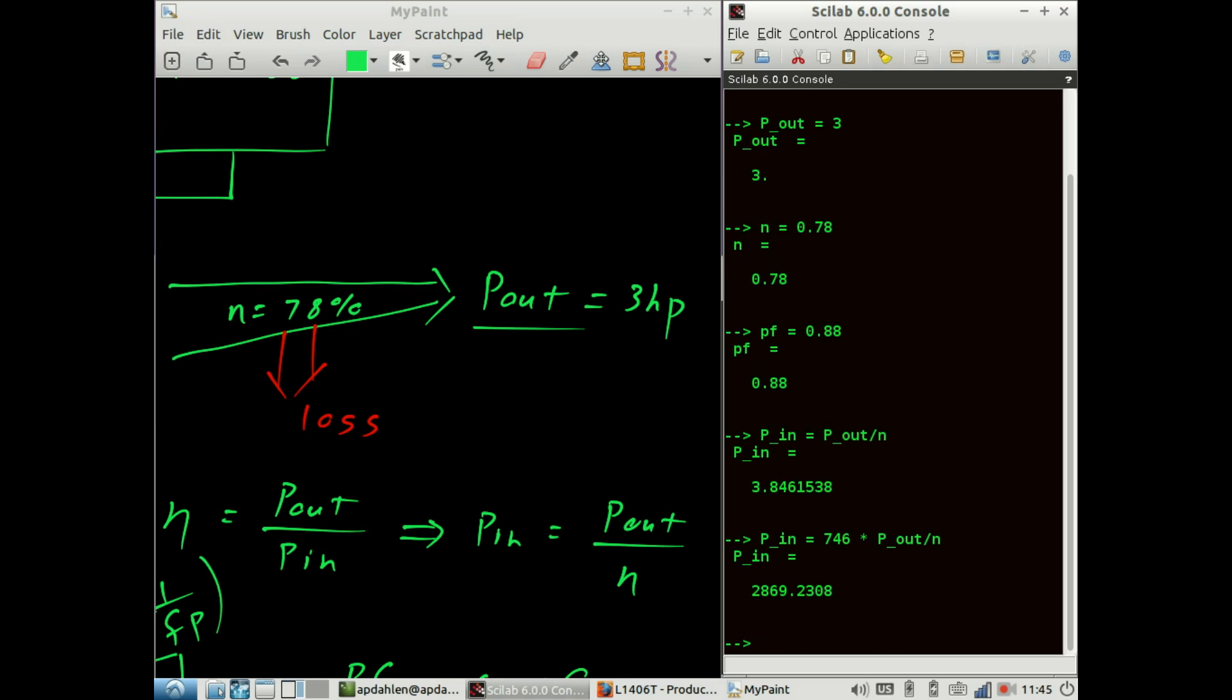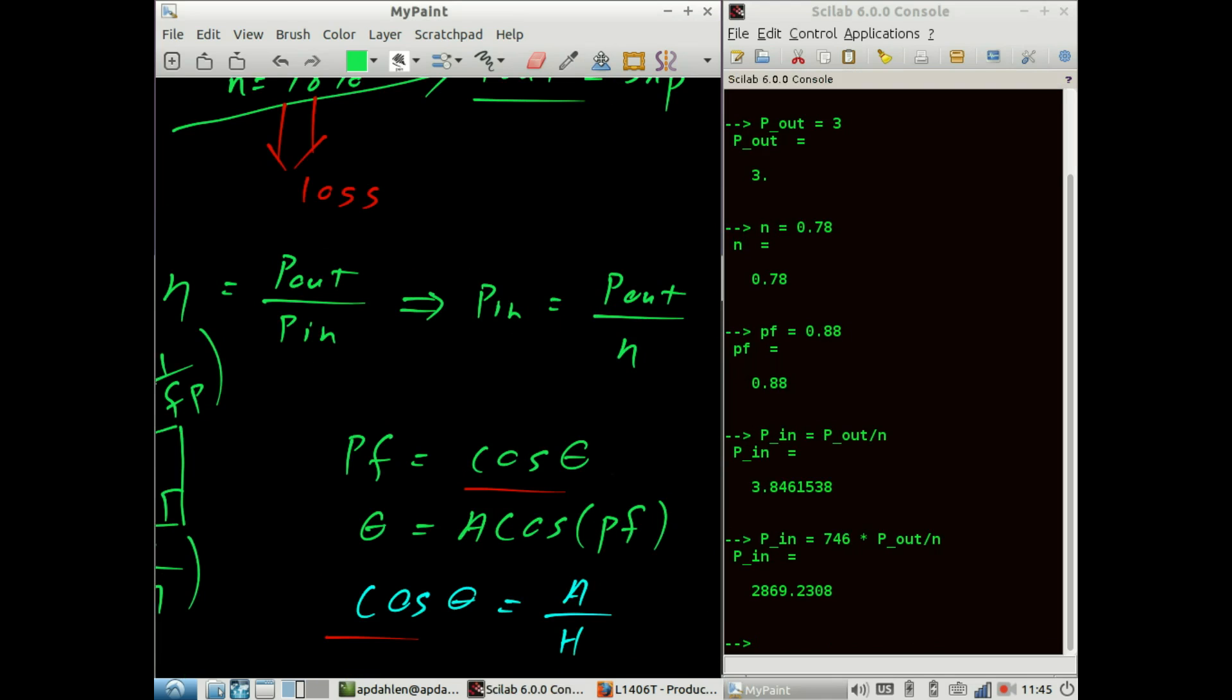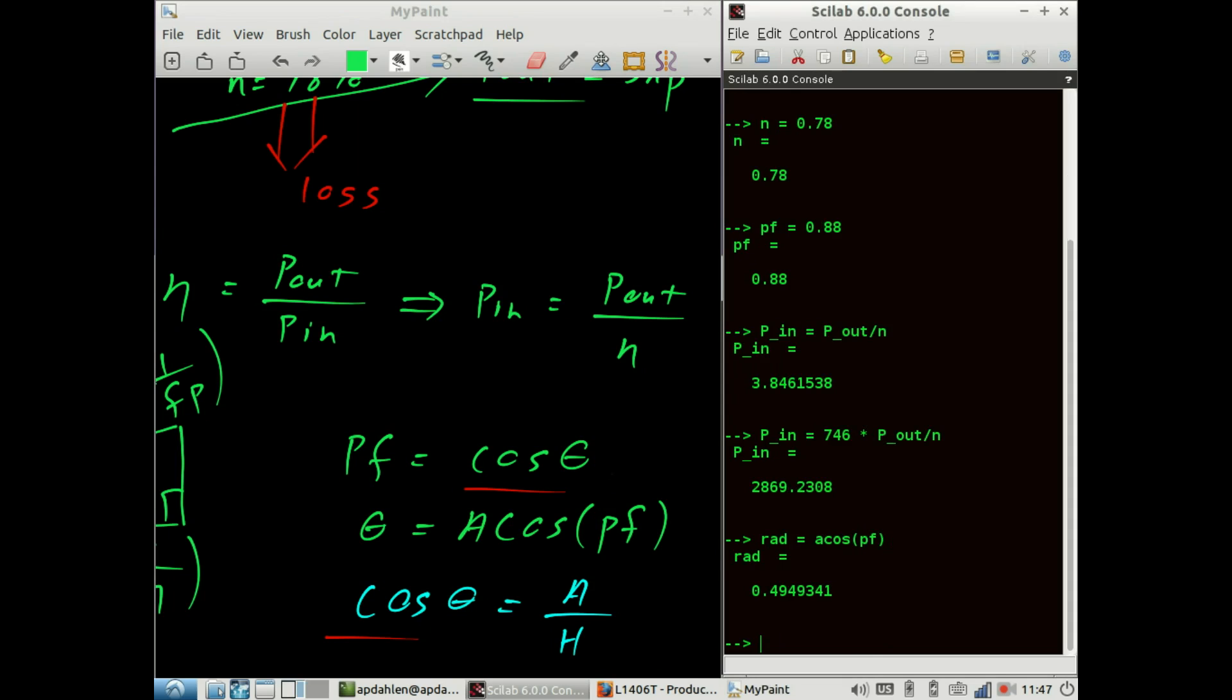There we go. Next, let's calculate the angle. Angle in radians is equal to arc cosine of the power factor. If we prefer, you could say the angle is equal to the radians to degrees of the radians. There we go. So 28 degrees.